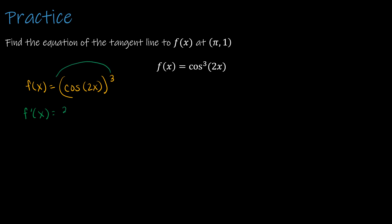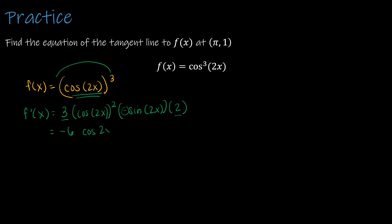Finding the derivative, I first use the power rule: 3 times cosine of 2x to the second power. Then the chain rule says cosine of 2x has its own derivative: the derivative of cosine of 2x is negative sine of 2x. This is where most people make their mistake — 2x also has a derivative, so I apply the chain rule again, bringing in a factor of 2. So f prime of x is negative 6 times cosine squared of 2x times sine of 2x.